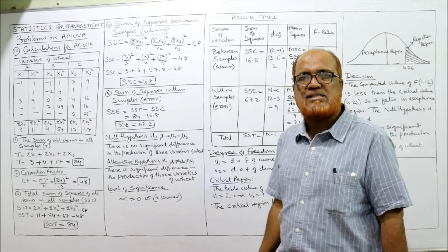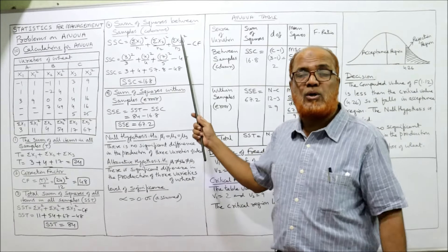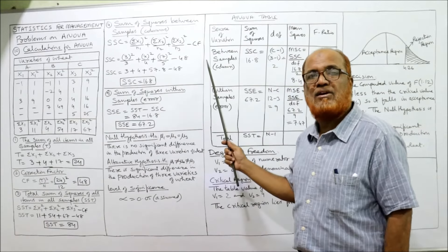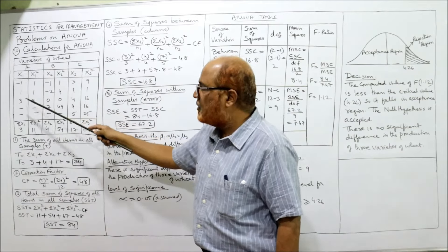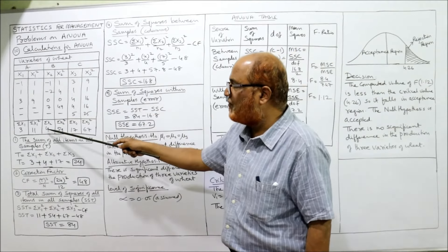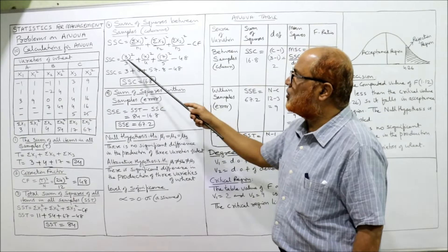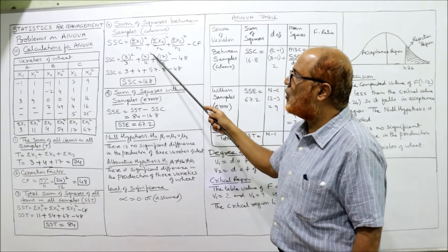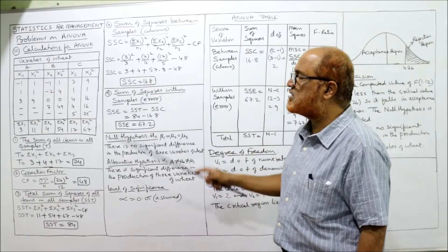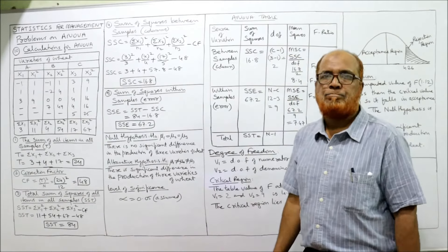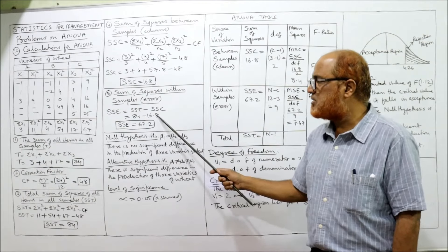SSC = (3²÷3) + (4²÷4) + (17²÷5) − CF = 3 + 4 + 57.8 − 48 = 16.8. SSE = SST − SSC = 84 − 16.8 = 67.2. All calculations are complete.